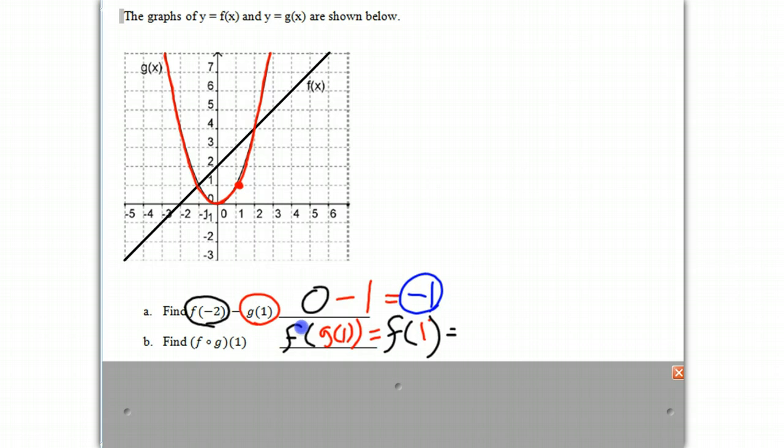And now we have to evaluate f of 1. Where x is equal to 1, the f function, the black function, is right there at 3. So therefore, f of 1 is equal to 3. And that is our answer.